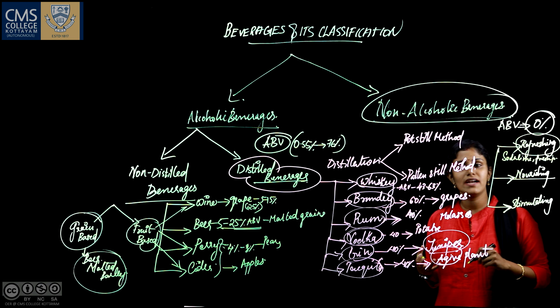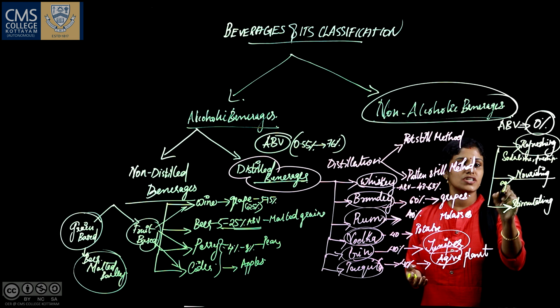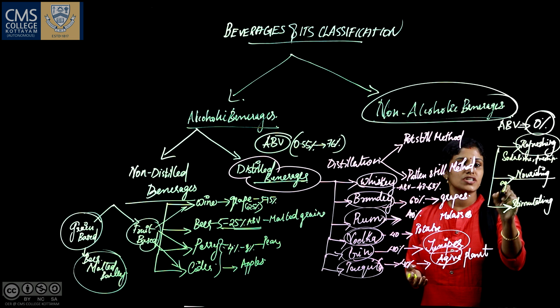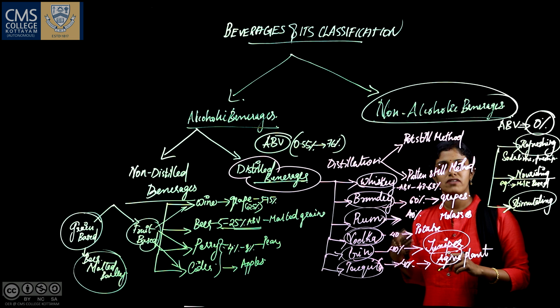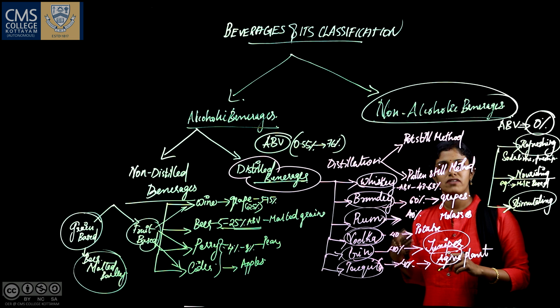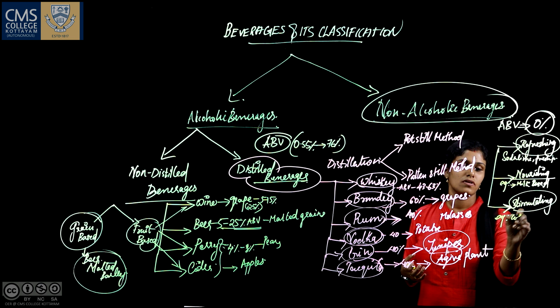Nourishing beverages are beverages that provide a nourishing health effect to our body. Examples include milk-based beverages such as Boost, Horlicks, milkshake, etc. The last category is stimulating beverages, which provide a stimulating effect to the body. Examples include coffee, tea, cocoa, etc.